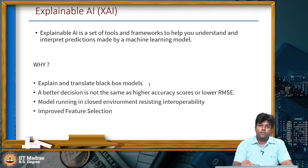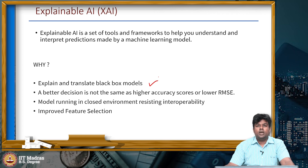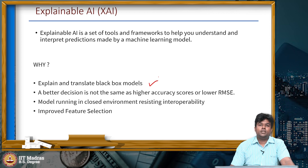First: explain and translate a black box model. In the process of model development, when we build a simple model like logistic regression, it is always easier to translate back how a specific prediction was made and relate it to the input training data. However, if we move on to a complex model like neural networks or XGBoost ensemble techniques, it is hard to understand how the underlying data is impacting the final output.